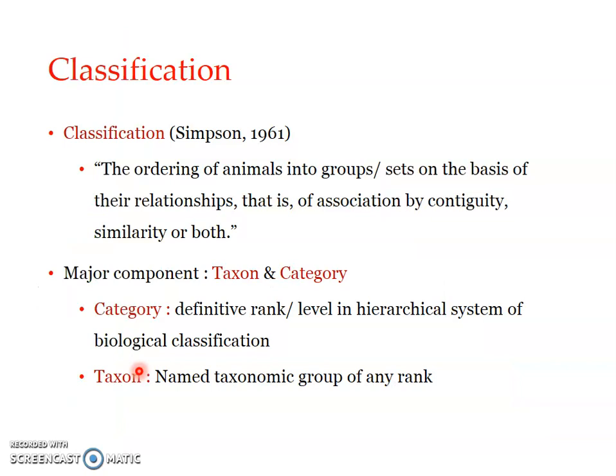When we speak about a taxonomic category, it is a definitive rank or level in the hierarchical system of biological classification. There are seven basic or primary categories which are obligatory: from highest to lowest — kingdom, phylum, class, order, family, genus, and species. Species is the lowest category while kingdom is the highest.